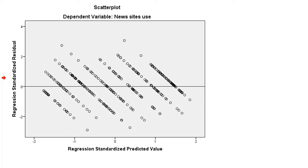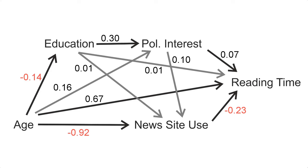In this way, we could continue with a regression model with political interest as an outcome variable, and then a regression model with education as an outcome variable — I trust that you can do that by yourself. The standardized coefficients are added to the path diagram. And if we now want to calculate the size of indirect effects, we can multiply the direct effects. However, we do not know the confidence intervals or the p-values of the indirect effects — these cannot be calculated in SPSS.